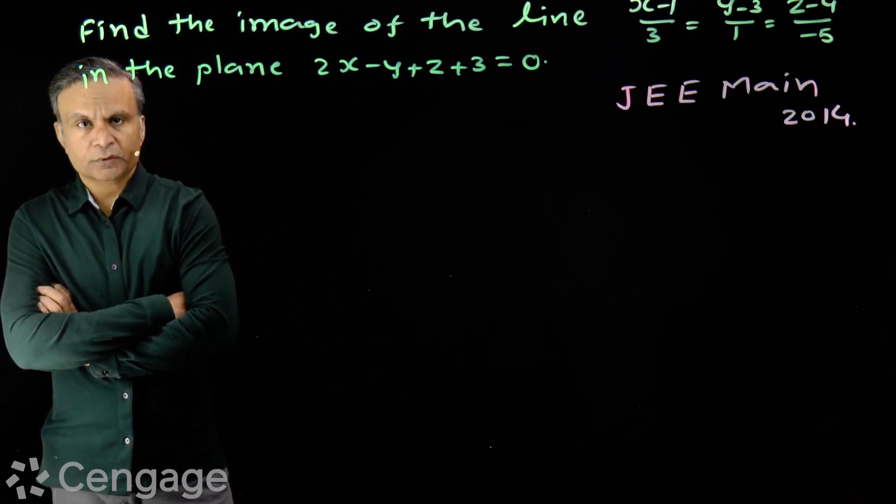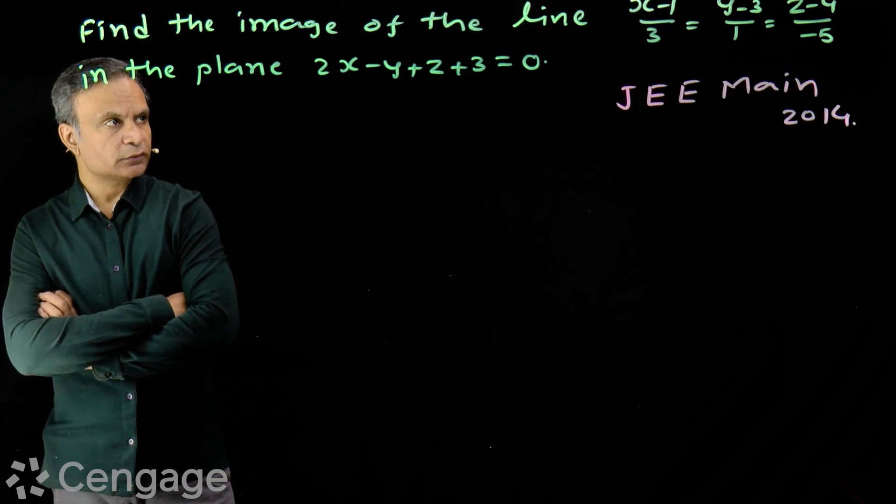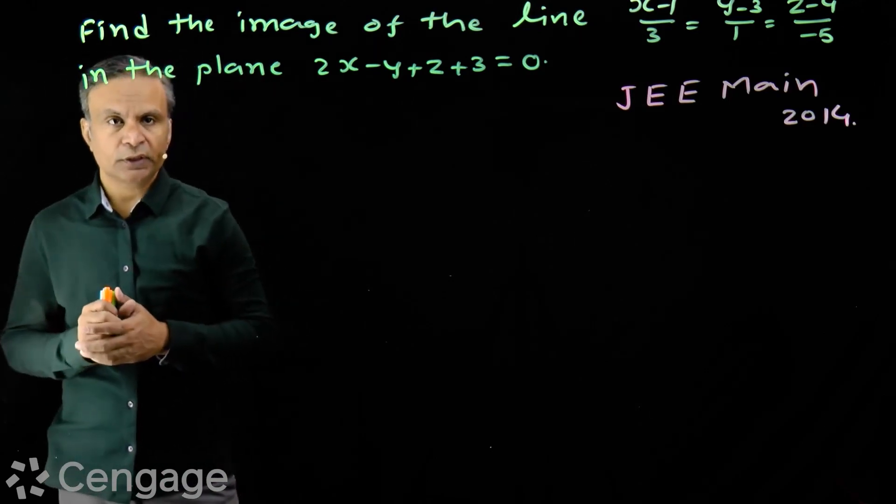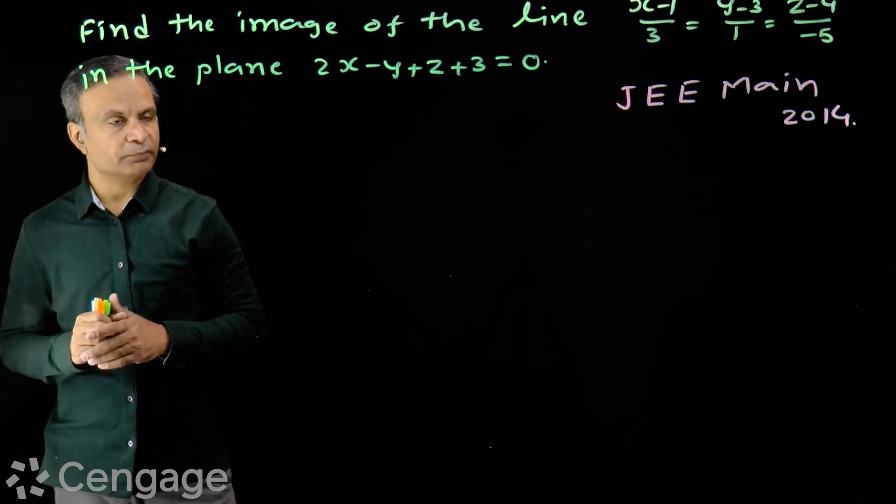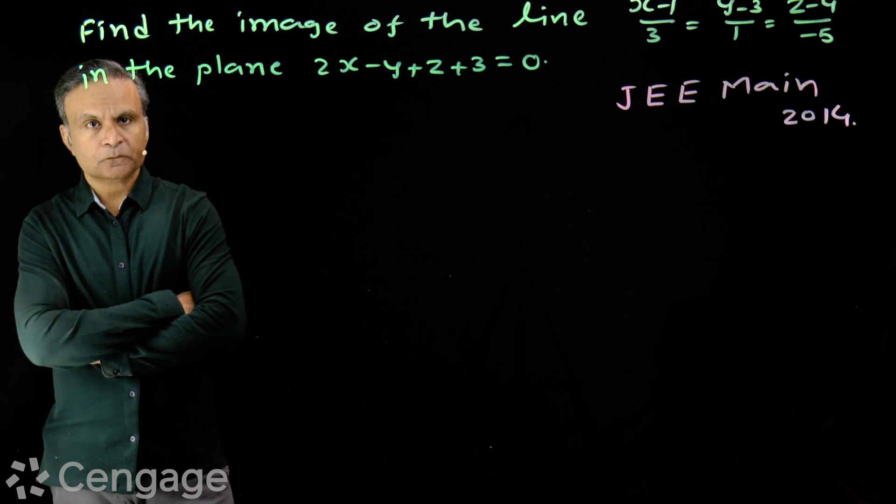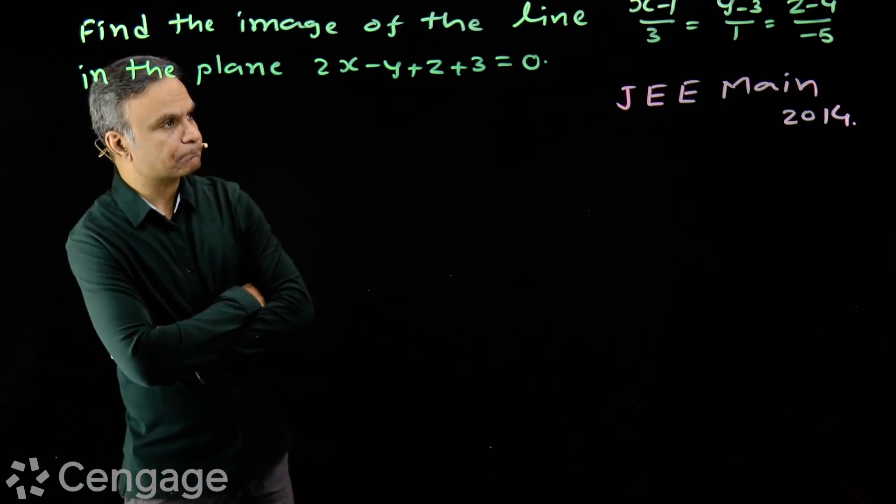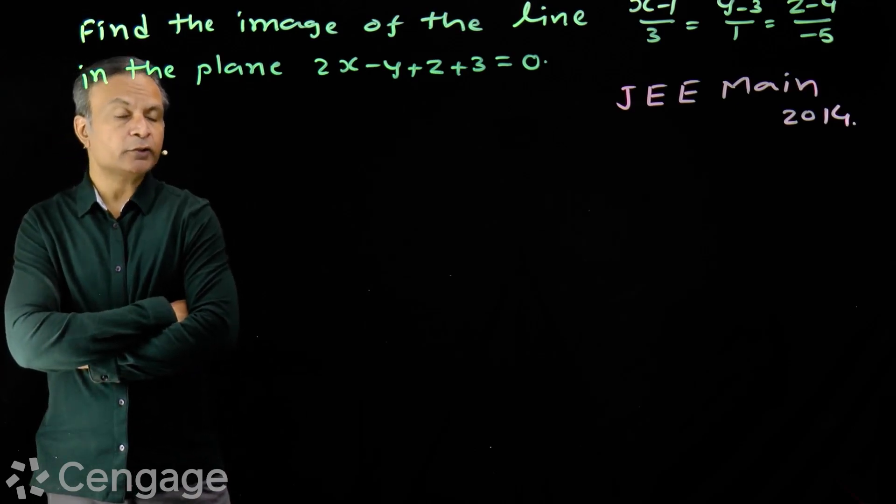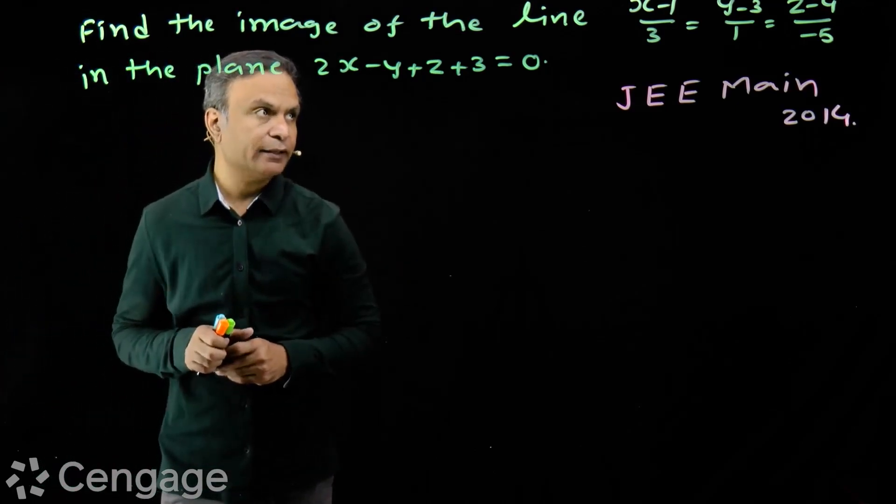Kya karenge? First of all, we will check the position of line in plane. Line in plane kis tarah se hain? Hum pehle yeh check karenge. To uske liye karenge? We check the dot product of vector normal to the plane and vector to which line is parallel.